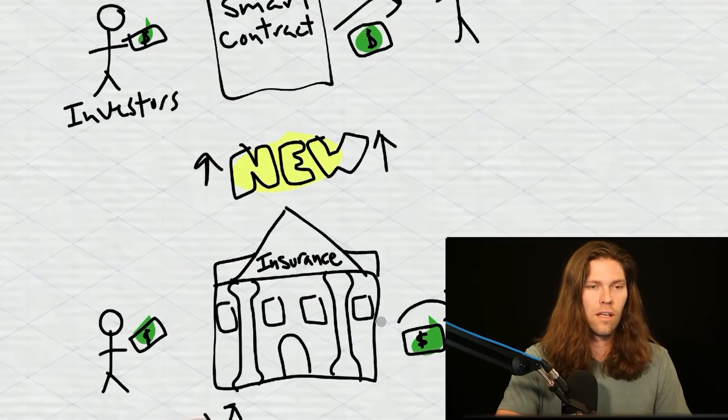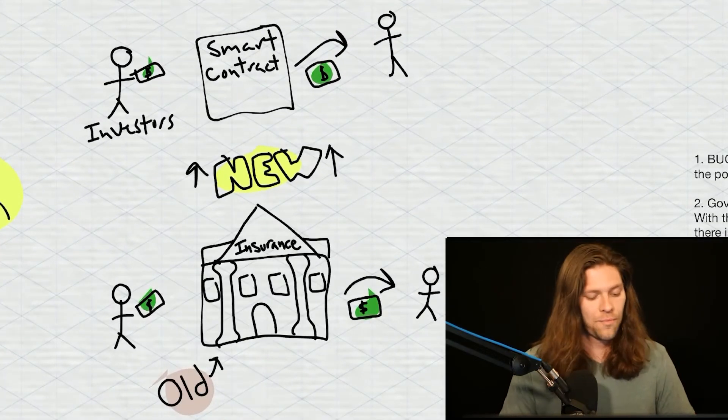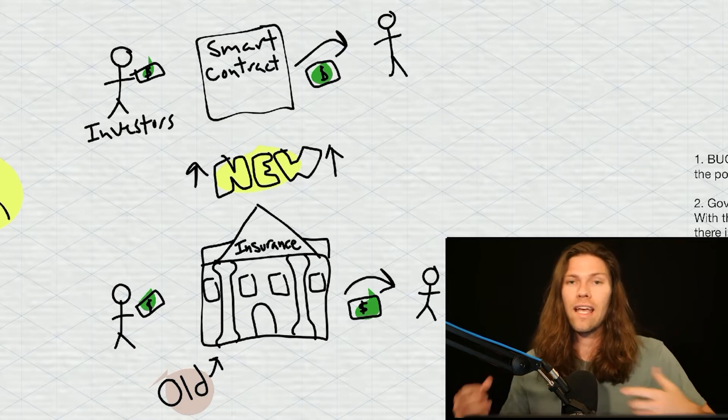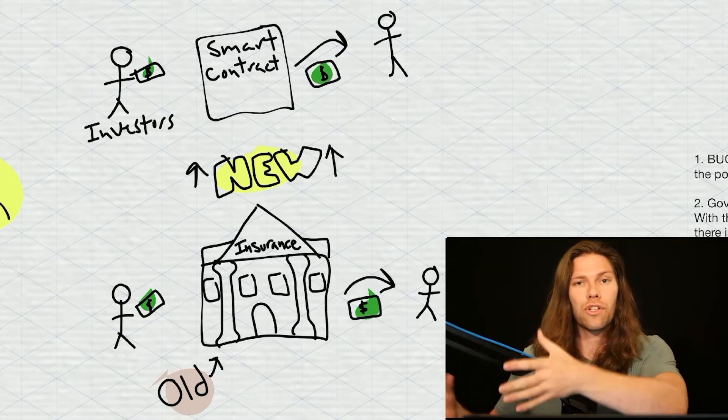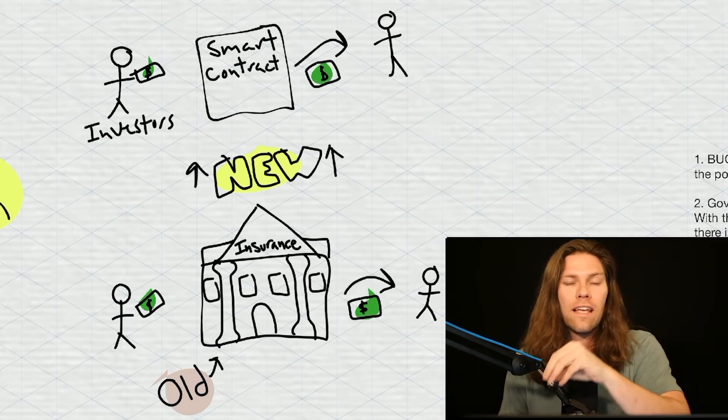Insurance. You might've heard me talk about this example before. You can see this looks kind of similar. The old version, you have a bunch of people who pay premiums into this big old established insurance company because they want to hedge against an unlikely event happening.